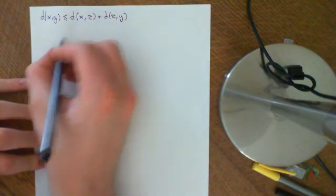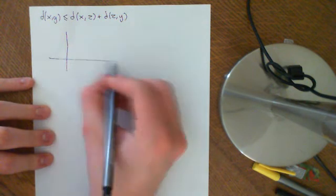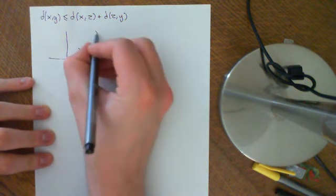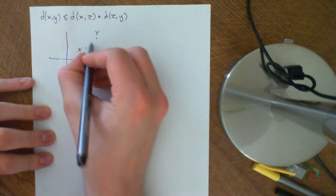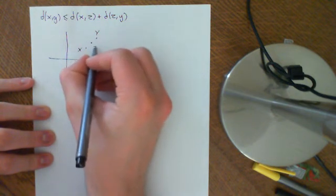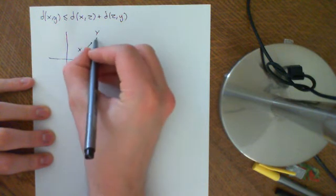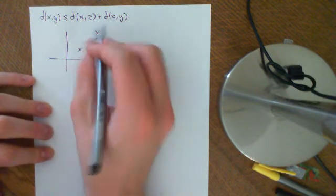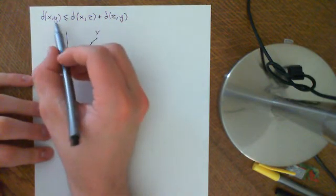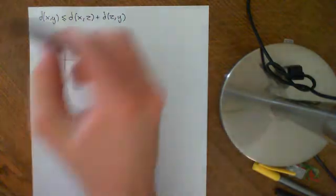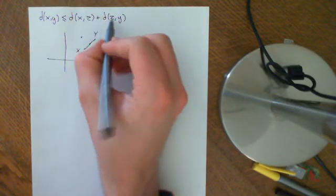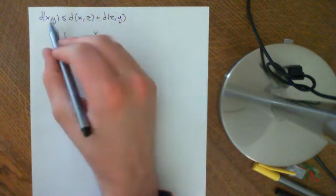That was called the triangle inequality, because if we imagine in R2 with the usual notion of distance, and we have two points x and y, if we take any third point z — even if z is actually on the straight line connecting them — then the distance between x and z and the distance between z and y, in that case, will actually be equal to the distance between x and y, so this inequality still holds. And obviously if z is somewhere else, then this side is going to be strictly greater than this side.